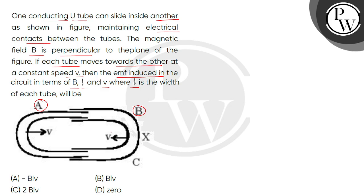If both tubes move toward each other at a constant speed v, then we have to find how much EMF is induced in the circuit. We have to use terms related to B, l, and v.